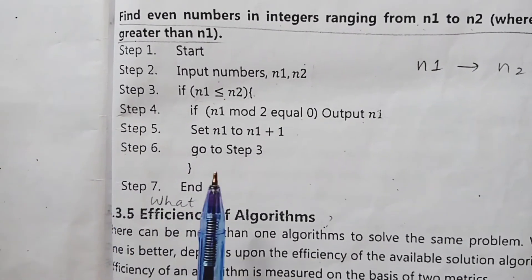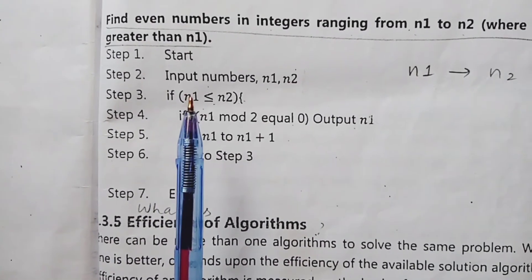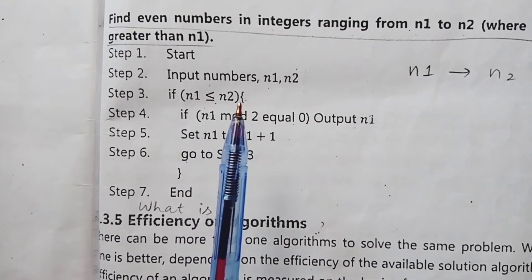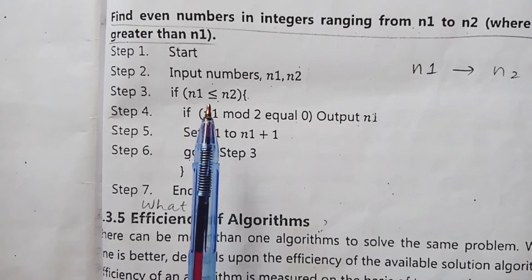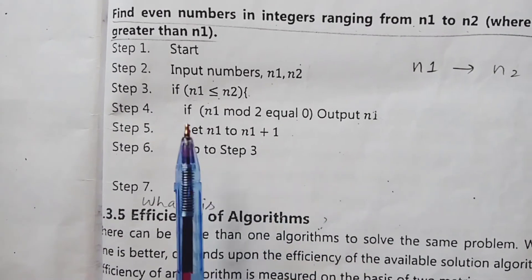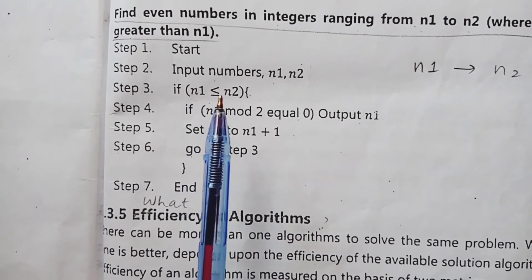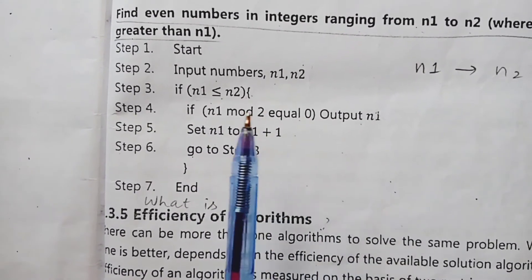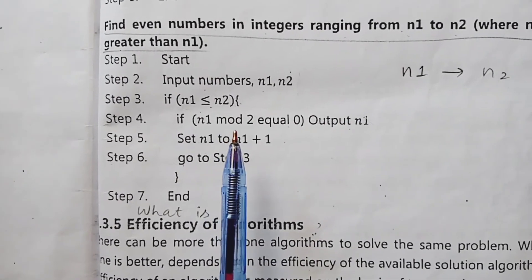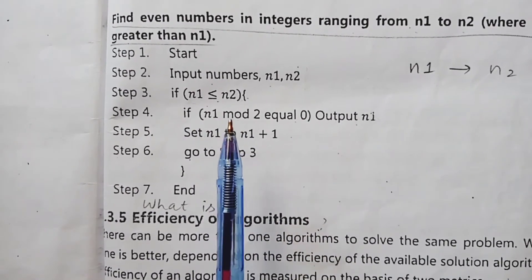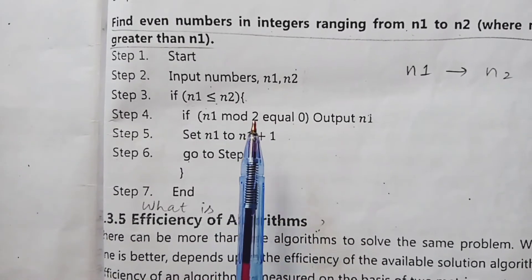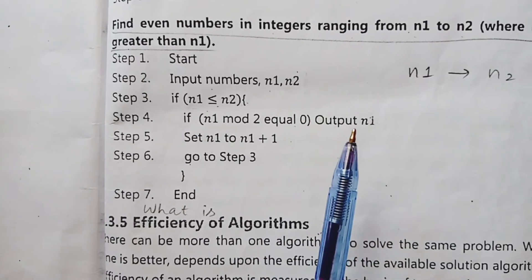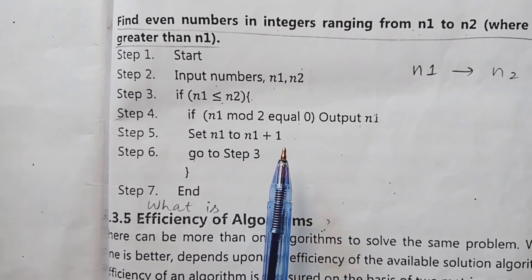Step number 3 checks a condition: if n1 is less than or equal to n2, the loop continues. Step number 4 checks: if n1 modulus 2 equals 0, the number is even — the modulus operator returns the remainder of n1 divided by 2; if the remainder is 0, the number is even and it is displayed. Step number 5 sets n1 to n1 plus 1, incrementing to the next number.